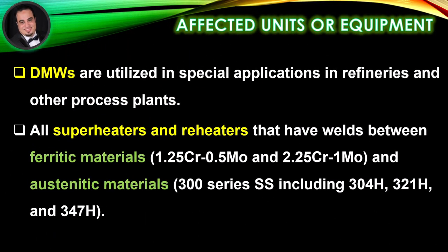Affected units or equipment. Dissimilar metal welds are utilized in special applications in refineries and other process plants, including all superheaters and reheaters that have welds between ferritic materials and austenitic materials.